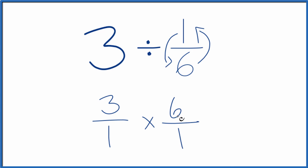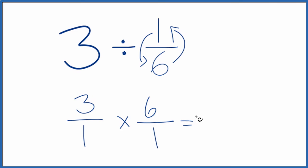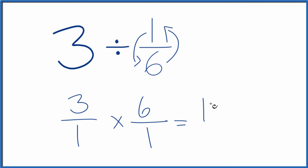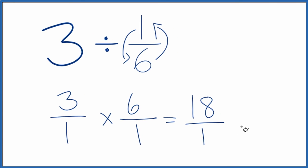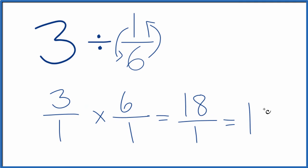Now we just have a multiplication problem, which is a little bit easier with fractions. We multiply the numerators, and then we multiply the denominators — that'll give us our answer. 3 times 6 is 18, and 1 times 1 is 1. And 18 divided by 1 is just 18.